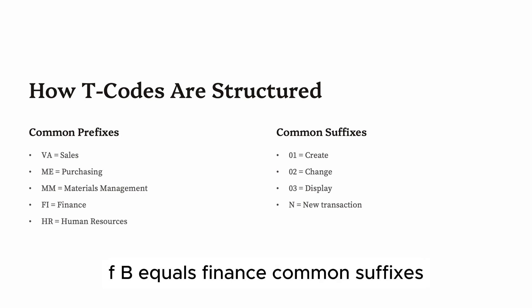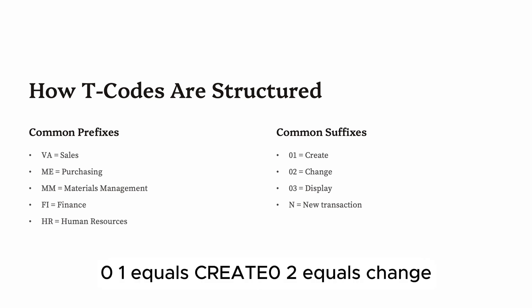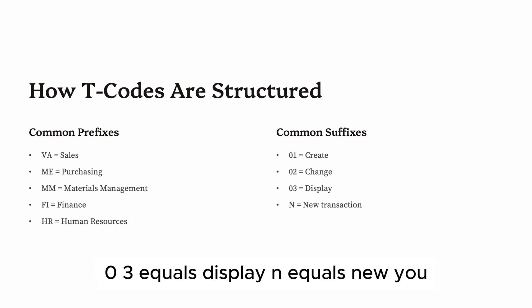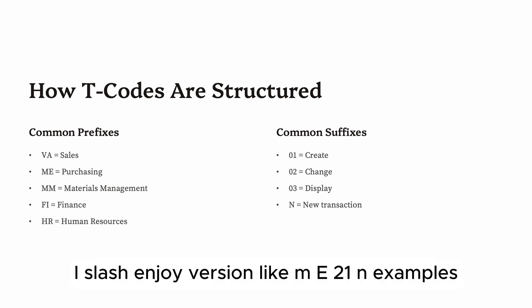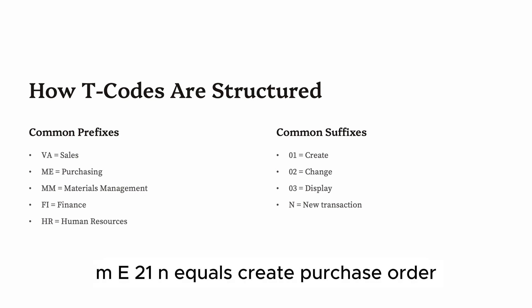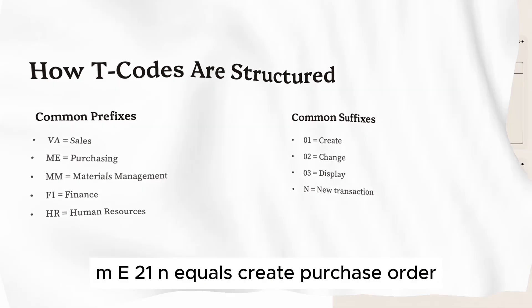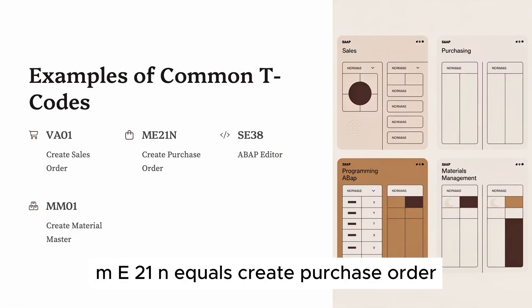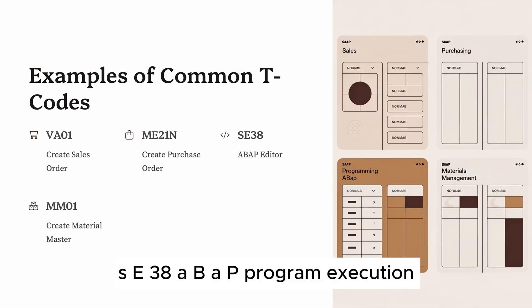Common suffixes also follow a pattern: 01 means Create, 02 means Change, 03 means Display, and N means the newer version — like ME21N. For example, VA01 is Create Sales Order, ME21N is Create Purchase Order, SE38 is ABAP Program Execution, and MM01 is Create Material Master.